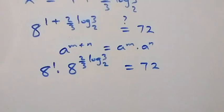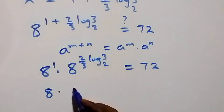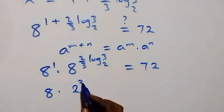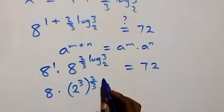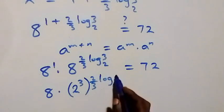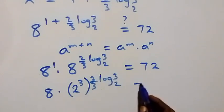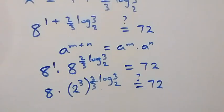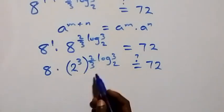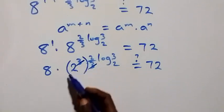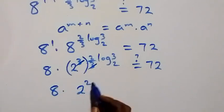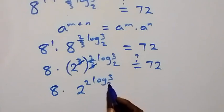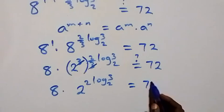We change 8 to base 2, writing it as 2 cubed. So 8 times (2 cubed) raised to power (2 over 3 log 3 to base 2) equals 72. The exponents multiply, and the 3 and the 3 in the denominator cancel, leaving 8 times 2 raised to power (2 log 3 to base 2) equals 72.